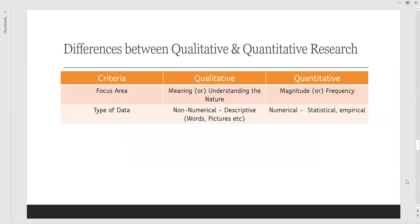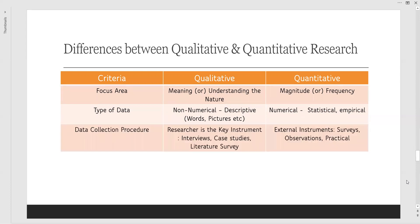The data collection procedure: the qualitative method takes its researcher as the key instrument. The researcher must take some interviews, case studies, literature surveys of the previous work, make a background - the researcher is the main person behind here. Whereas in quantitative we depend upon external instruments like surveys, observation, practical experiments. We have to depend on the external points.